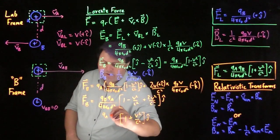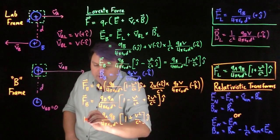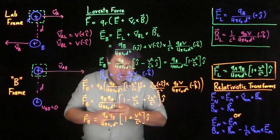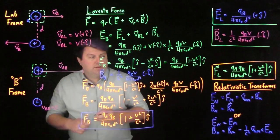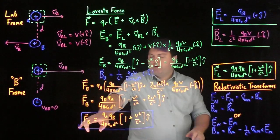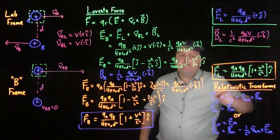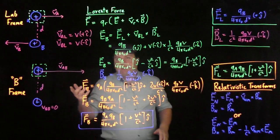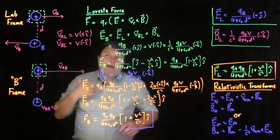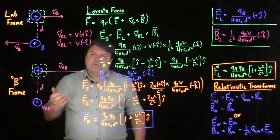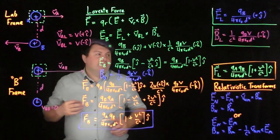So our force in frame B is Q_A Q_B over 4π ε₀ D² × (1 + V²/C²) J hat. Interestingly, this is exactly the same as the force in the lab frame and exactly the same as the force in frame A. It only works if we only do one of these two transforms. This shows us that this is not the real form — the real form to do these field transforms requires special relativity, which we'll learn in later classes.